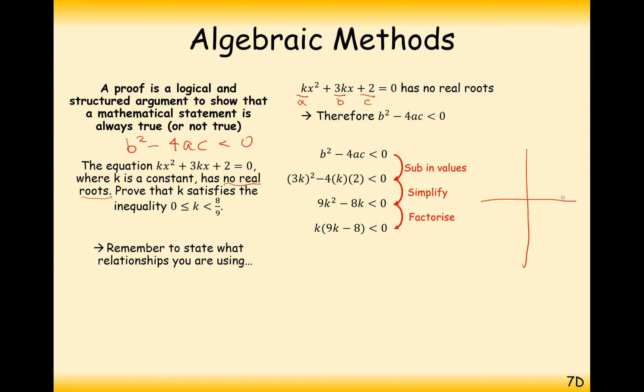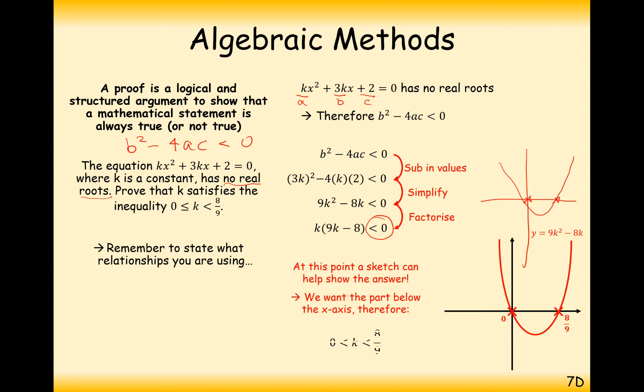Simplifying our algebra, and the way that we're going to do this is we're going to factorize. So now what we get in a little diagram is two roots, and we'll get one at 0 and one at 8 over 9. It's a positive k squared graph, so it's going to look like this. And we want the answer to be less than 0. Okay, so we want the answer to be on the lower side of 0, so it's going to be in between the 0 and the 8 over 9.